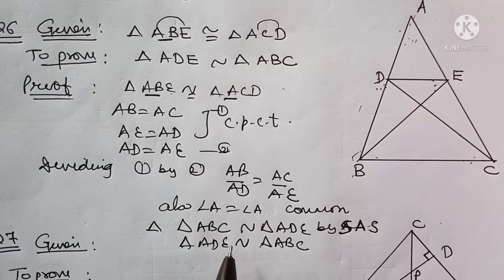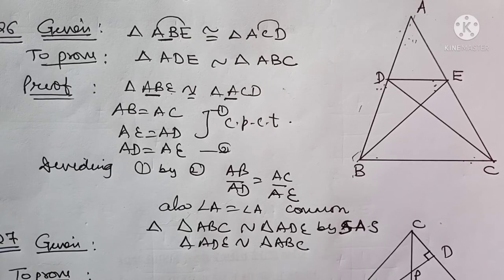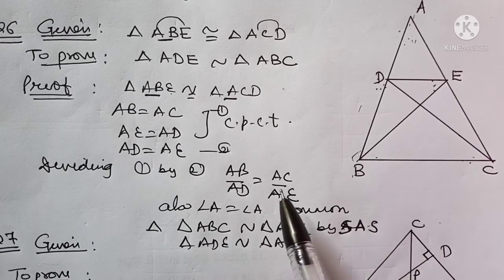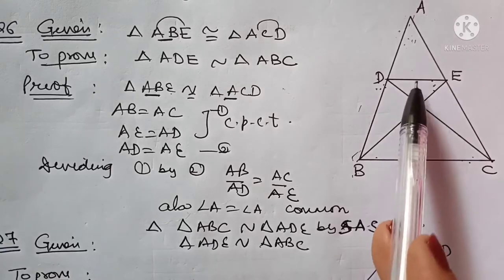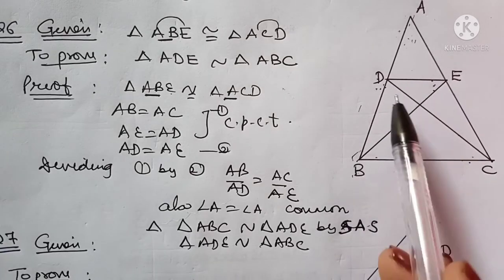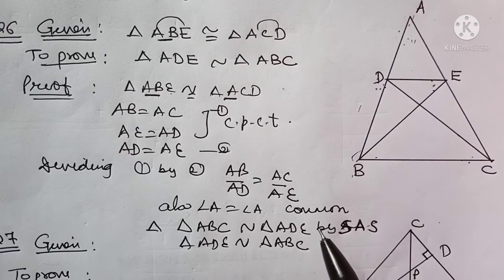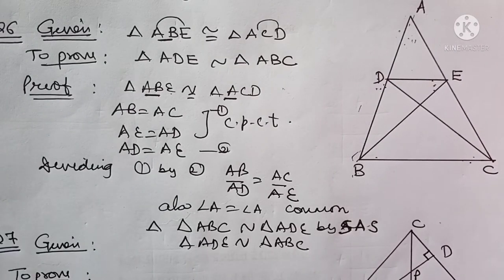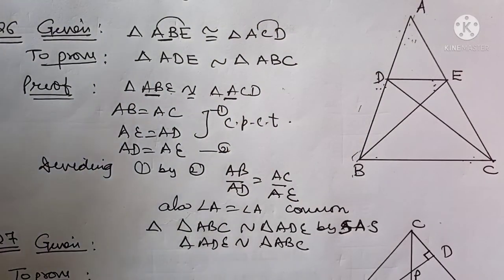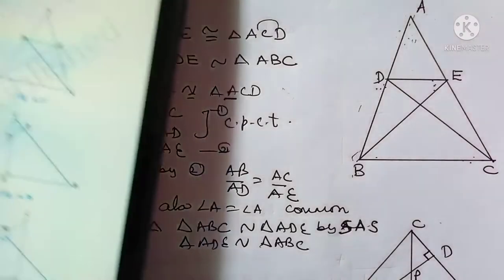You can also write it as triangle ADE is similar to triangle ABC. Alternatively, by the converse of BPT, DE will be parallel to BC. Then angle D will be equal to angle B, angle A is common, and by AA rule the triangles are similar. There are many methods to solve any single question — follow whichever comes to mind or whichever you find easy. Let's go on to the next question.